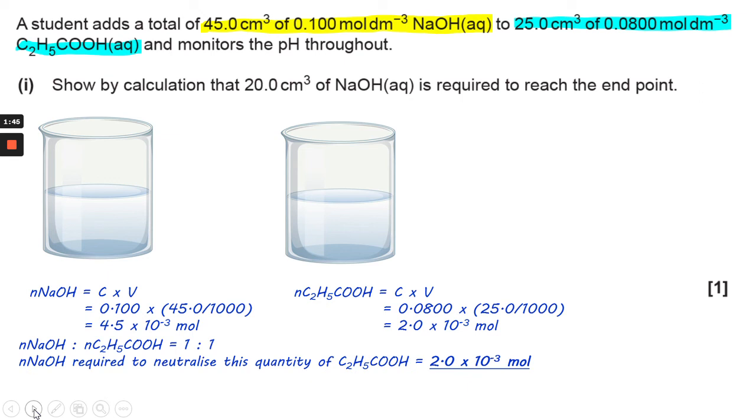So a 1 to 1 mole ratio exists between those two components. So therefore, the number of moles of sodium hydroxide required to neutralize that particular quantity of C2H5COOH is again 2.0 times 10 to the minus 3 moles.